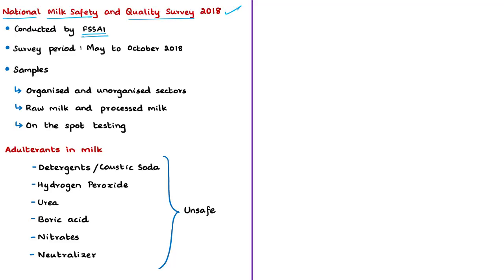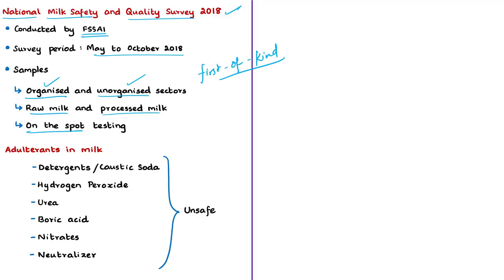Samples were collected from both organized sectors (retailers and processors) and unorganized sectors (local dairy farms, milk vendors, and milk mandis). The survey covered raw milk as well as various types of processed milk. All samples collected were uniformly tested on the spot for critical parameters of quality and safety. According to FSSAI, this survey is the first of its kind and the most comprehensive survey of safety and quality of liquid milk.